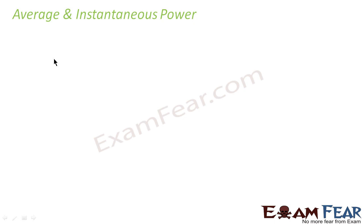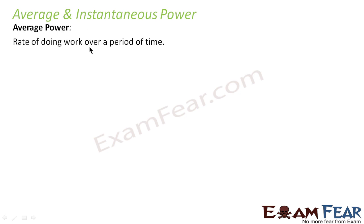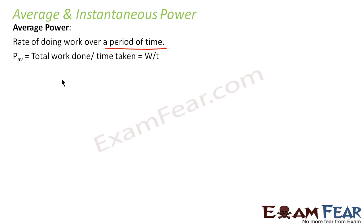Now let us look at average and instantaneous power. Average power is the rate of doing work over a period of time — that means work done per unit time over a specified period. It is denoted by P-average, and it is equal to total work done divided by time taken.